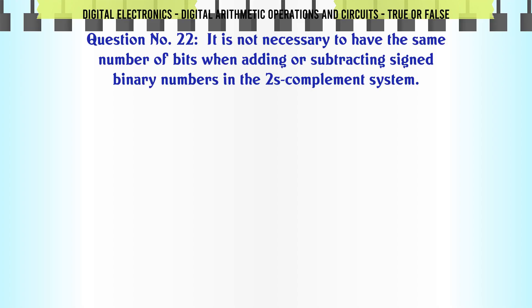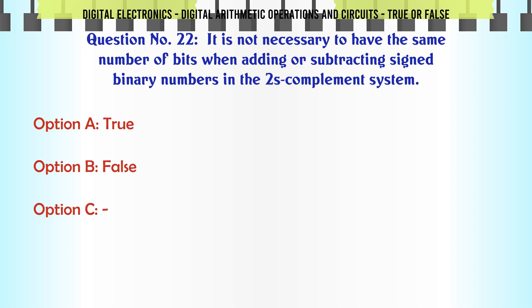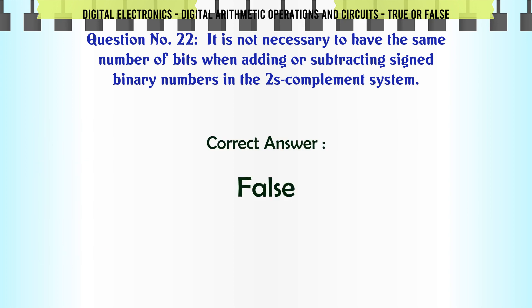It is not necessary to have the same number of bits when adding or subtracting signed binary numbers in the 2's complement system. True or False? The correct answer is False.